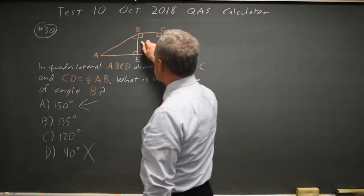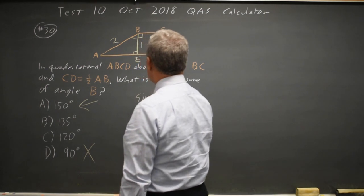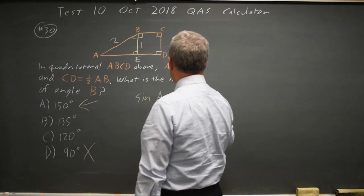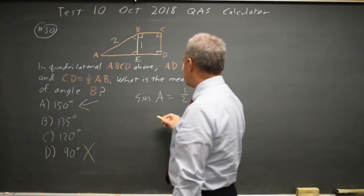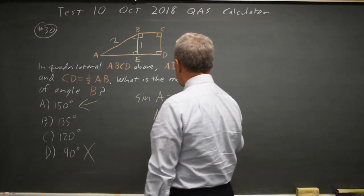If I say that BE is 1, then AB is 2, and the sine of angle A is opposite over hypotenuse is 1 over 2. The angle that has a sine of 1 half is 30 degrees, so angle A equals 30 degrees.